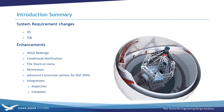There are a lot of enhancements that will accelerate your productivity — things like the Web2 redesign, which gives you the opportunity to access your vault from anywhere. The redesign makes it easier to get files in and out, so getting third-party files into your vault might be easier. Also covered: conditional notifications in the workflow, file shortcut menus for bill of materials, where-used, and the contains tab, plus new permissions, DXF/DWG conversion task options, and integration with Inspection and Composer.